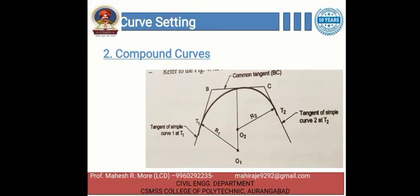The next one is the compound curve. A curve having a series of two or more simple curves of different radii curving in the same direction is called a compound curve. For better understanding, we can see the figure. In a compound curve, the two adjacent curves will have a common tangent BC as shown in the figure. The centers of the two tangent curves lie on the same side of the curve. To avoid cutting through hard rocks, heavy cutting, or flaws in the alignment of the road or track, compound curves are provided.